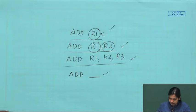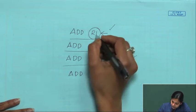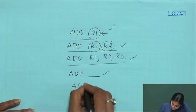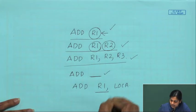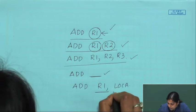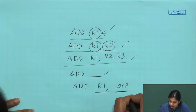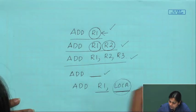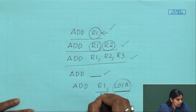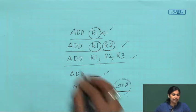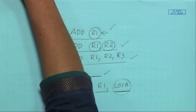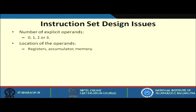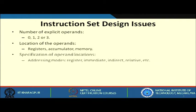Location of operands — by this we mean where the operands reside. For example, in 'add R1, LOC_A', R1 is a processor register (within the processor), and location A is a location in memory (not in the processor register). So by location of operands we mean either it is in a register, in an accumulator, or in memory.